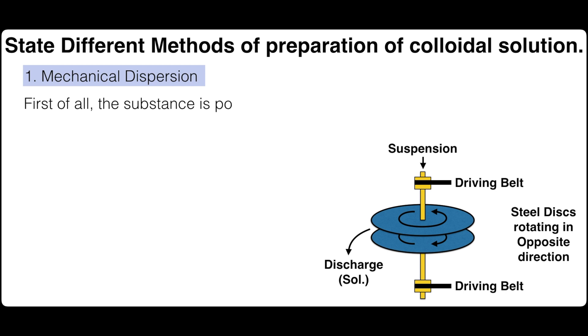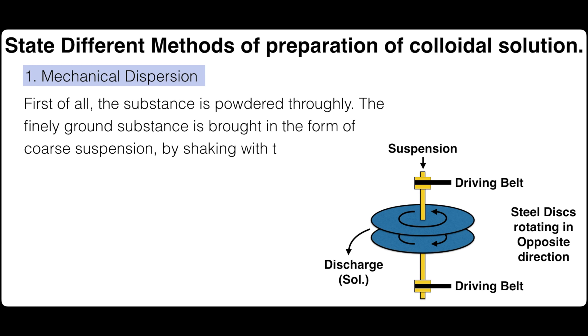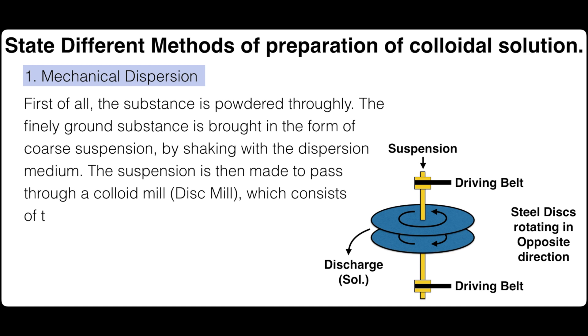First of all, the substance is powdered thoroughly. The finely ground substance is brought in the form of coarse suspension by shaking with the dispersion medium. The suspension is then made to pass through a colloid mill or disc mill which consists of two metallic discs almost touching each other and rotating with a terrific speed in opposite directions.